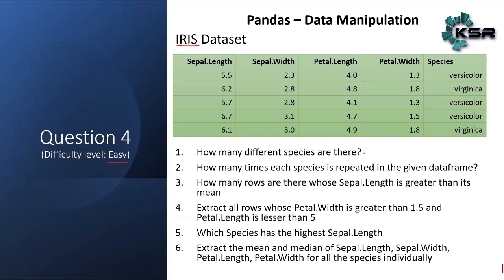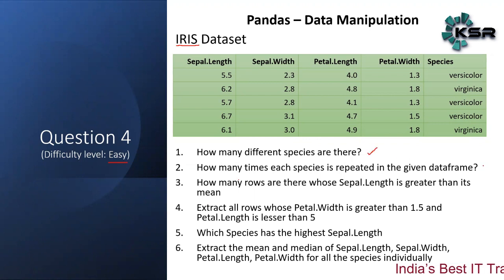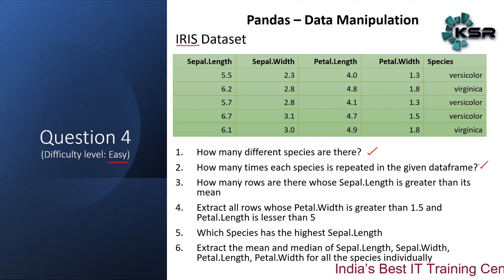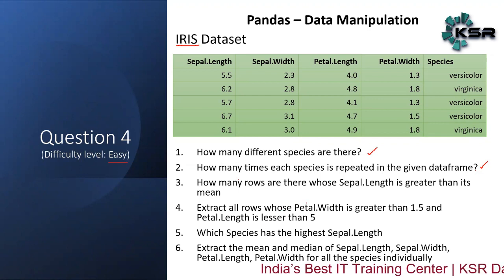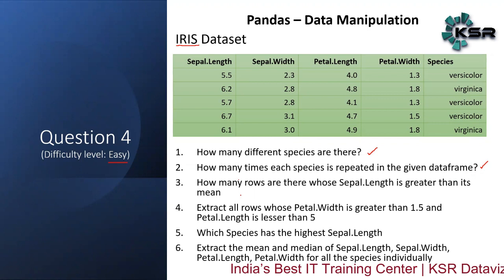We have a column for species and the question is: what is the count of different species? The second question is: how many times is each species repeated in the given data frame? For example, versicolor 30 times, virginica 50 times, etc.